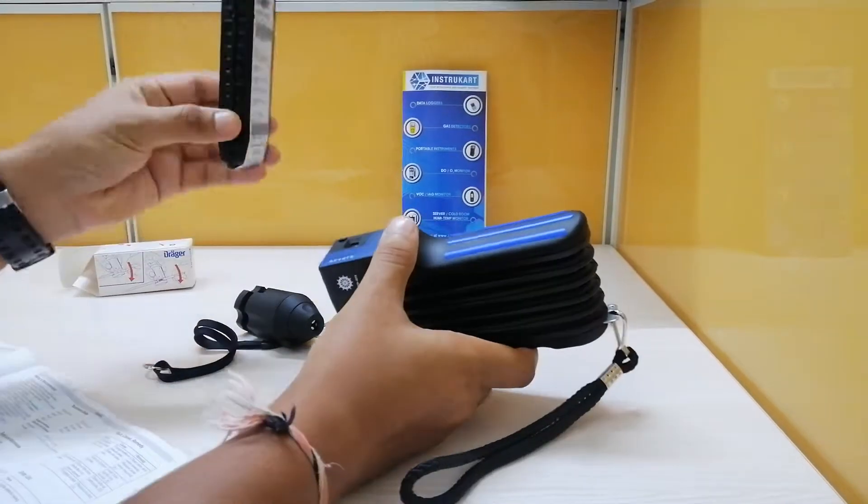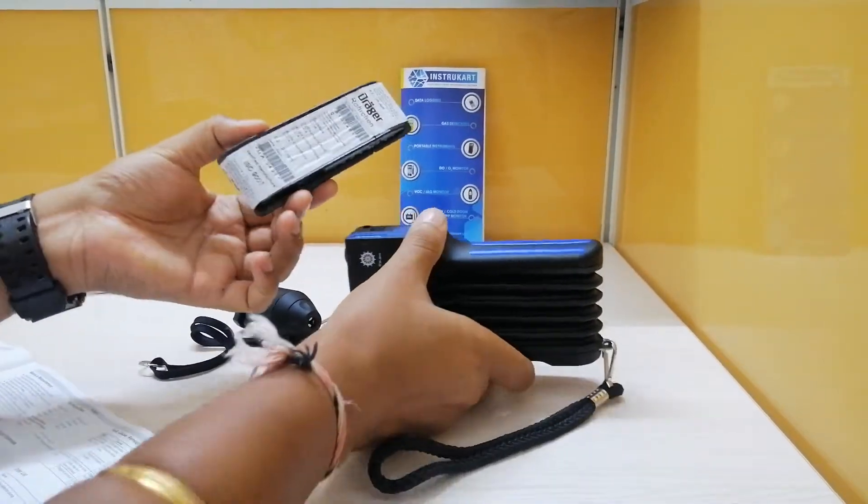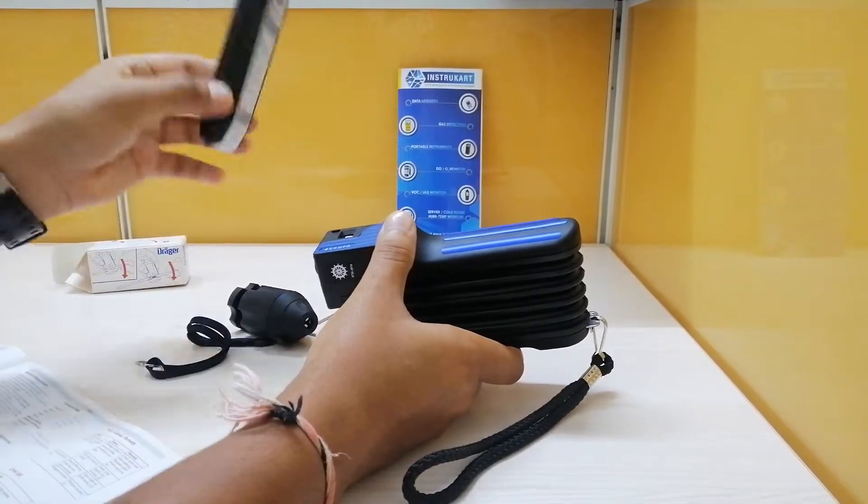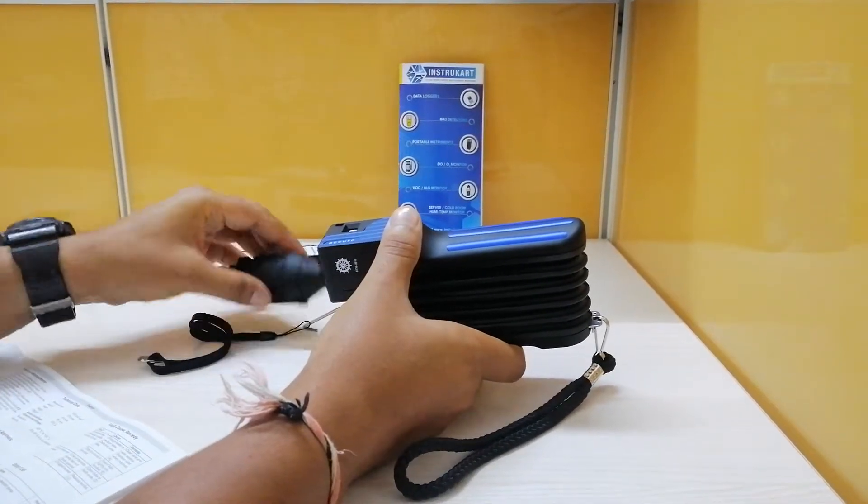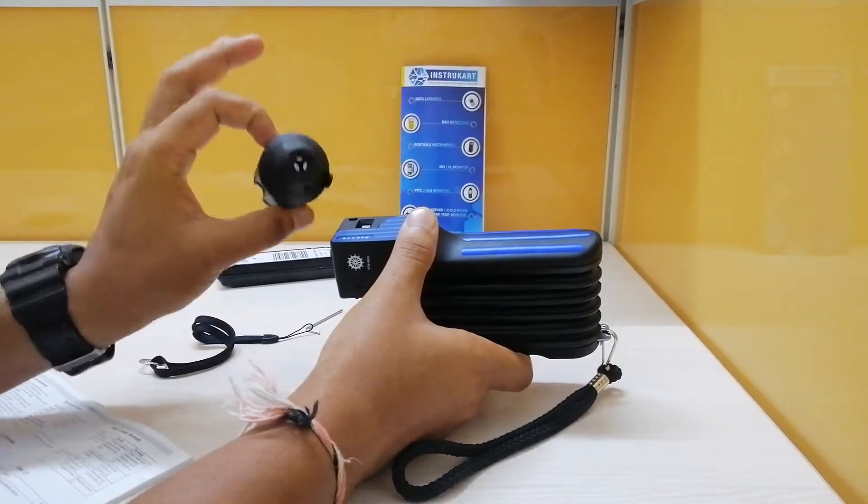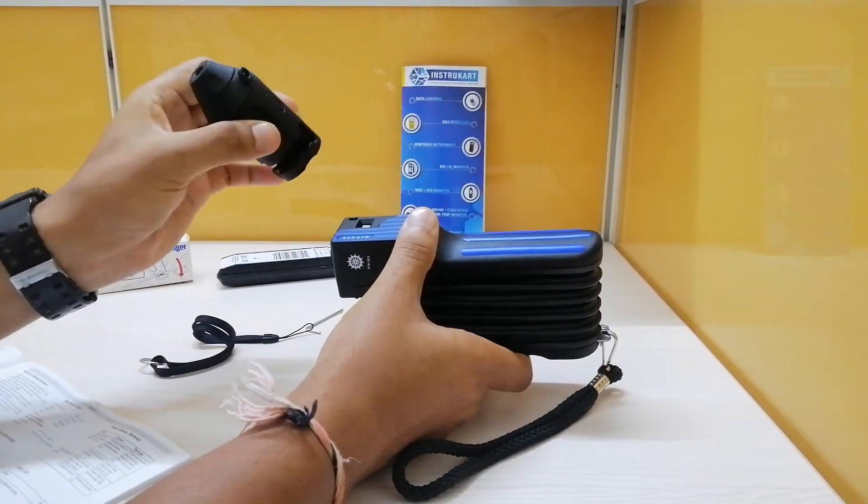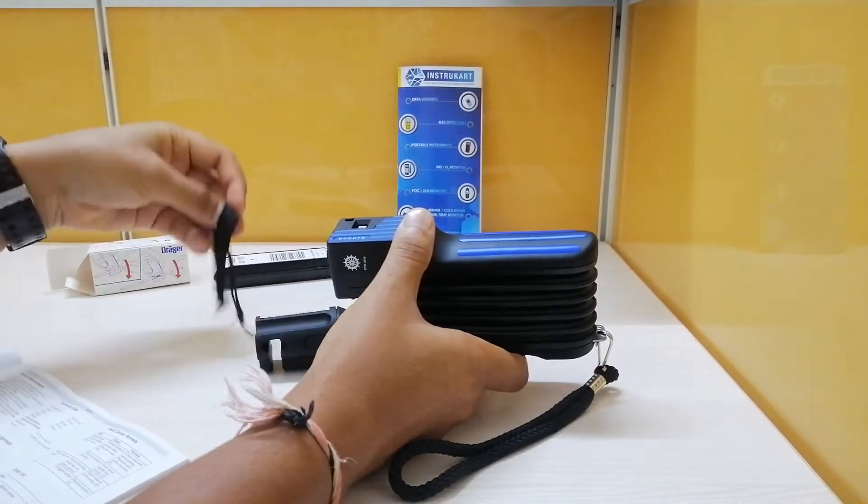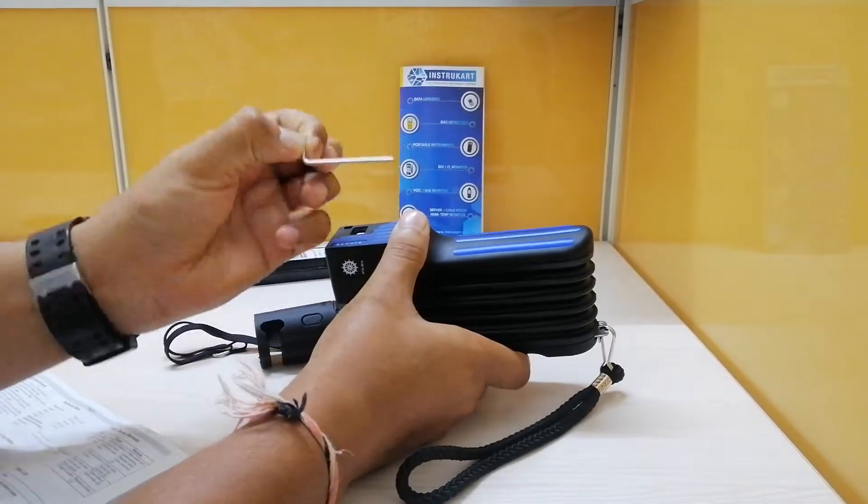Please understand that this particular tube has to be purchased separately. This is not along with this pump. The standard accessories which come with the pump are this glass tube opener, this trap, and an Allen key.